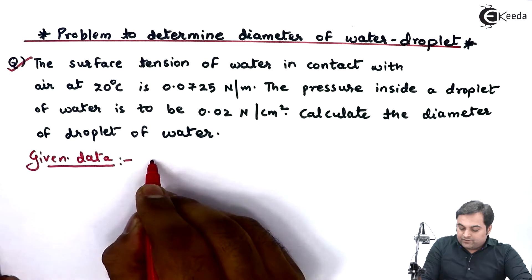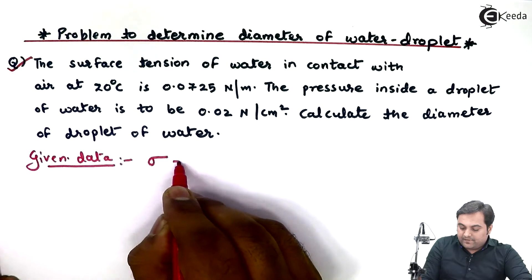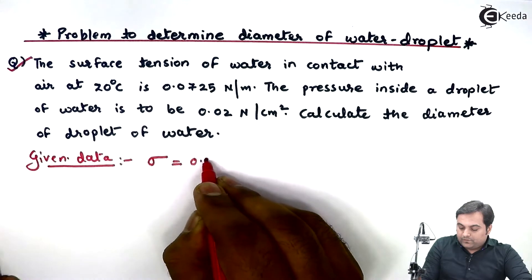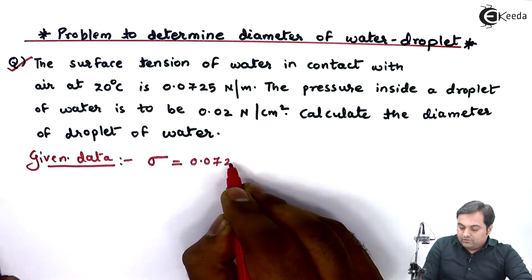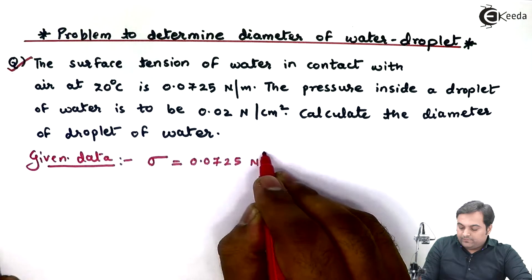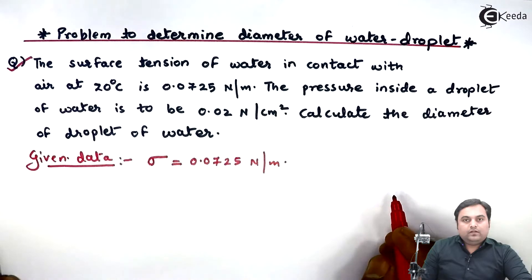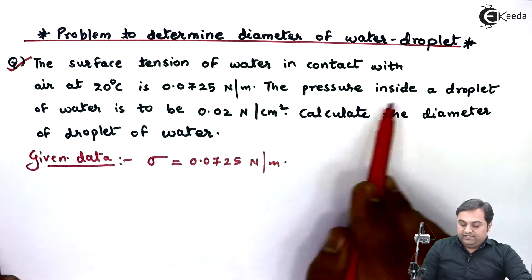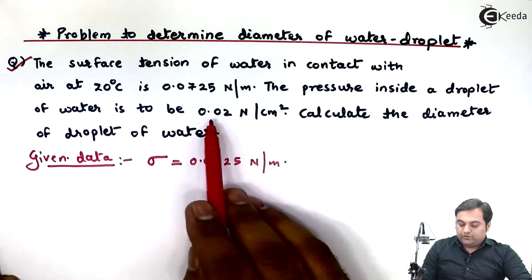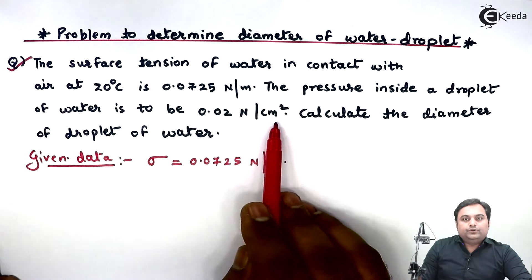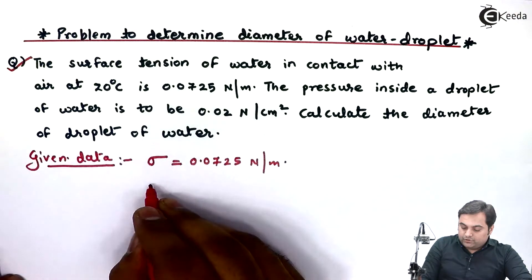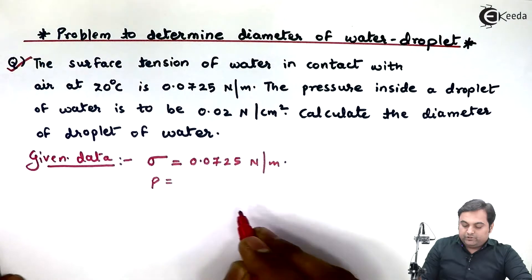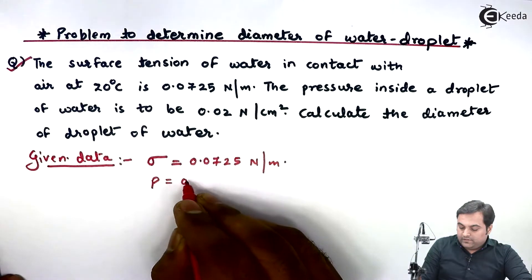This is the value of surface tension, so surface tension is denoted by sigma: 0.0725 Newton per meter. The pressure inside a water droplet is to be 0.02 Newton per centimeter square.